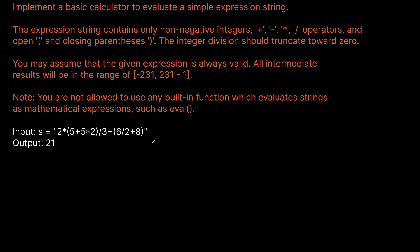Let's look at an example with this complex-looking string. The output should be 21. We need to respect order of operations, so we evaluate everything in parentheses first. Five plus five times two: the five times two occurs first, giving 10 plus 5 = 15. Then 6 divided by 2 is 3, plus 8 is 11. So we have 2 times 15 divided by 3 plus 11. Dividing 15 by 3 gives 5, so 2 times 5 is 10, plus 11 equals 21.